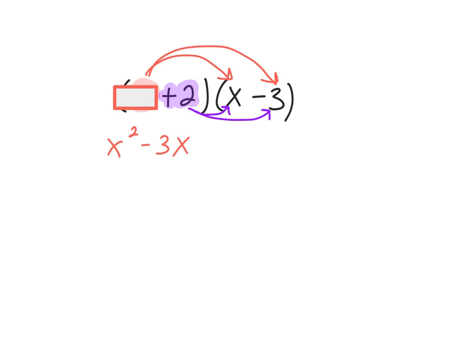Okay, let's go ahead and distribute that next term now. So, now I have a positive 2 times x. Well, that's going to be a positive 2x. Here, I have a positive 2 times a negative 3, which is a negative 6.